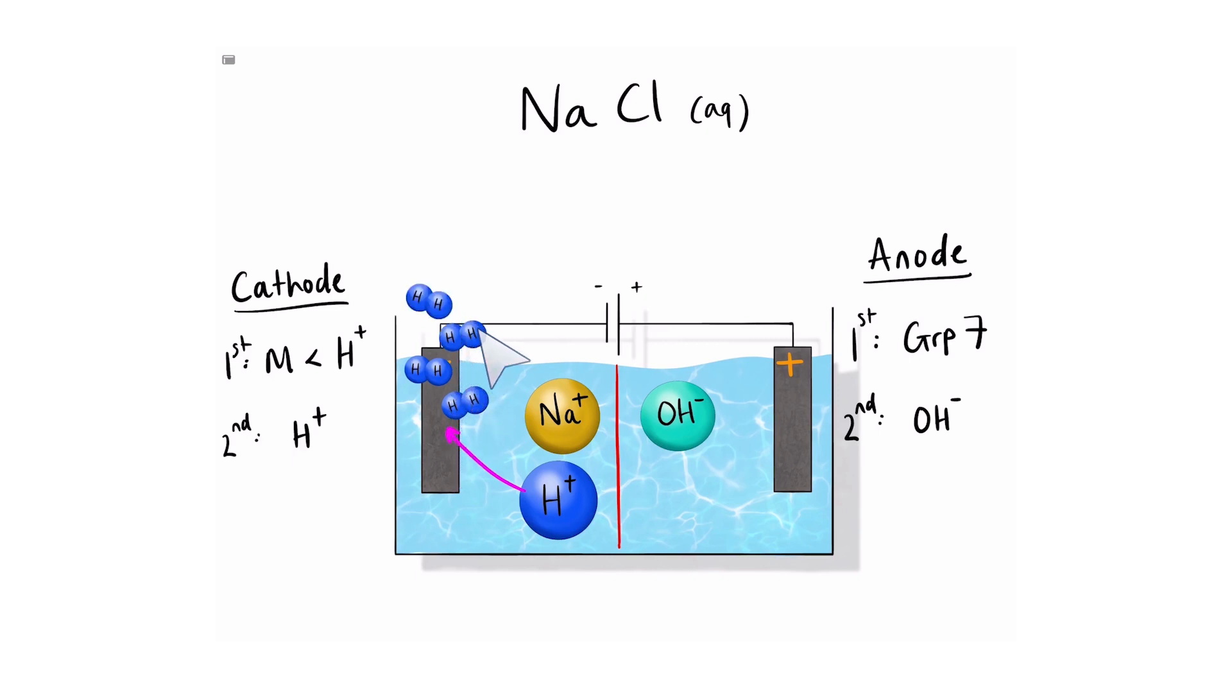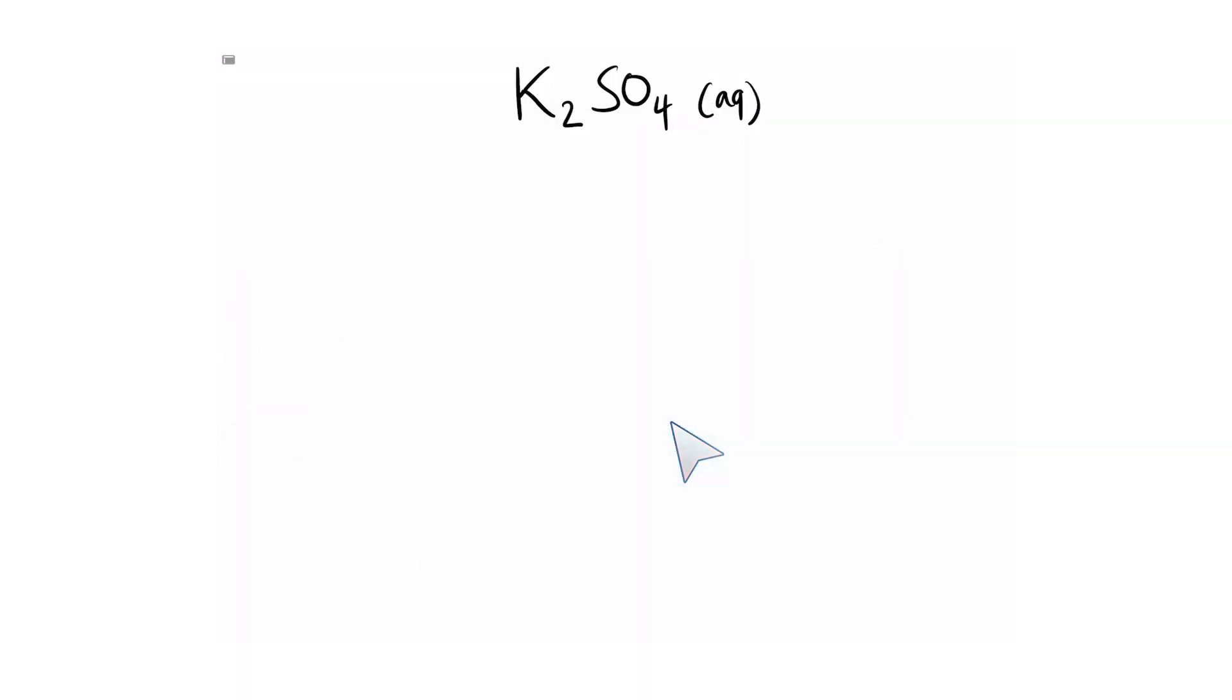So therefore, we are left with a sodium hydroxide solution. Let's have a go at doing the electrolysis of potassium sulfate in aqueous conditions. Potassium sulfate breaks down into potassium ions and sulfate ions. And remember, in aqueous conditions, we produce hydrogen and hydroxide ions.